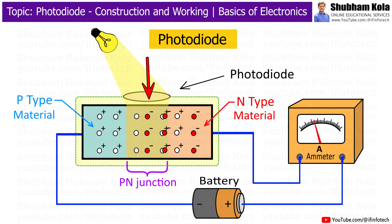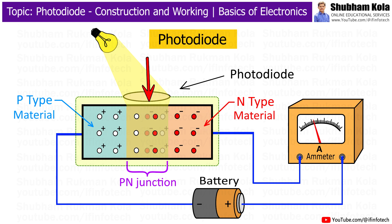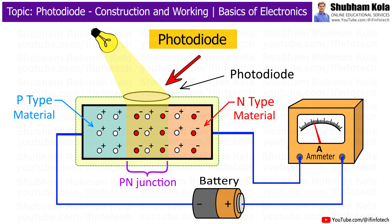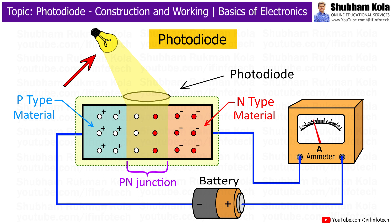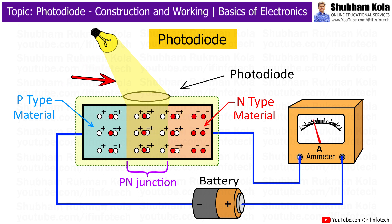In this video, we are going to learn about the working of a photodiode. A photodiode is a type of diode that is sensitive to light. It converts light into electrical signals which can be used in various electronic applications.